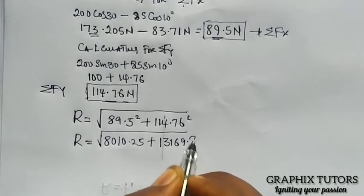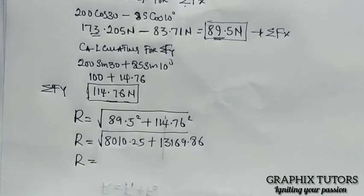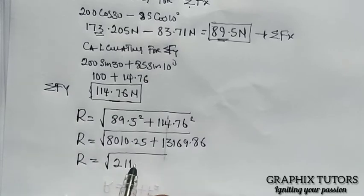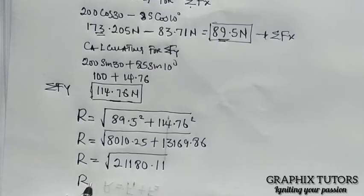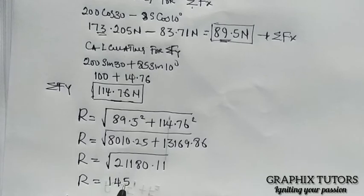This gives 8010.25 plus 13169.86, which is the square root of 21180.11. So my resultant here will now give me 145.53 Newton. That is my resultant force.